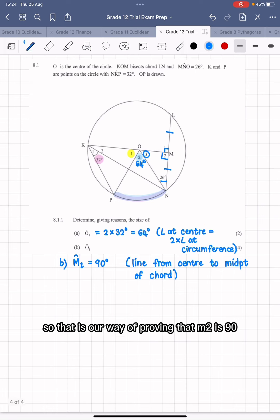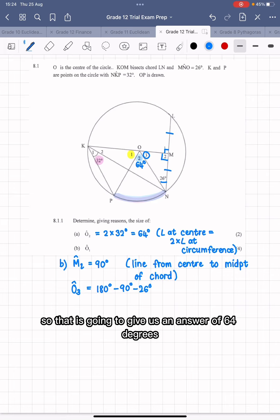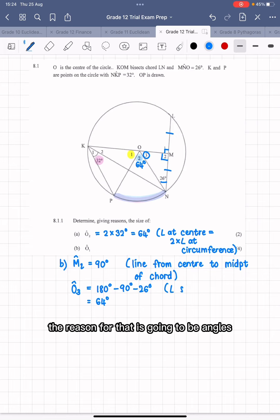Then we can calculate O3 using 180 minus 90 minus 26. So that is going to give us an answer of 64 degrees. The reason for that is going to be angle sum in triangle or sum of angles in a triangle. You can also write that.